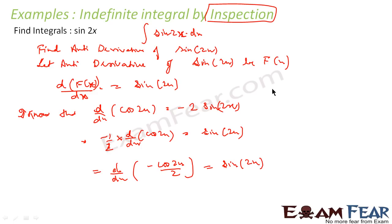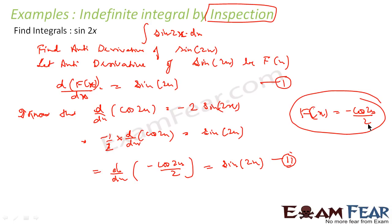Now, if I compare equation 1 and 2, I can see that F(x) is nothing but minus cos 2x by 2. So that is my answer, plus c — some constant. Because if you take any constant, derivative of cos 2x is minus 2 sin 2x, but if you add a constant it will still give minus sin 2x only. So F(x) is minus cos 2x by 2 plus some constant.